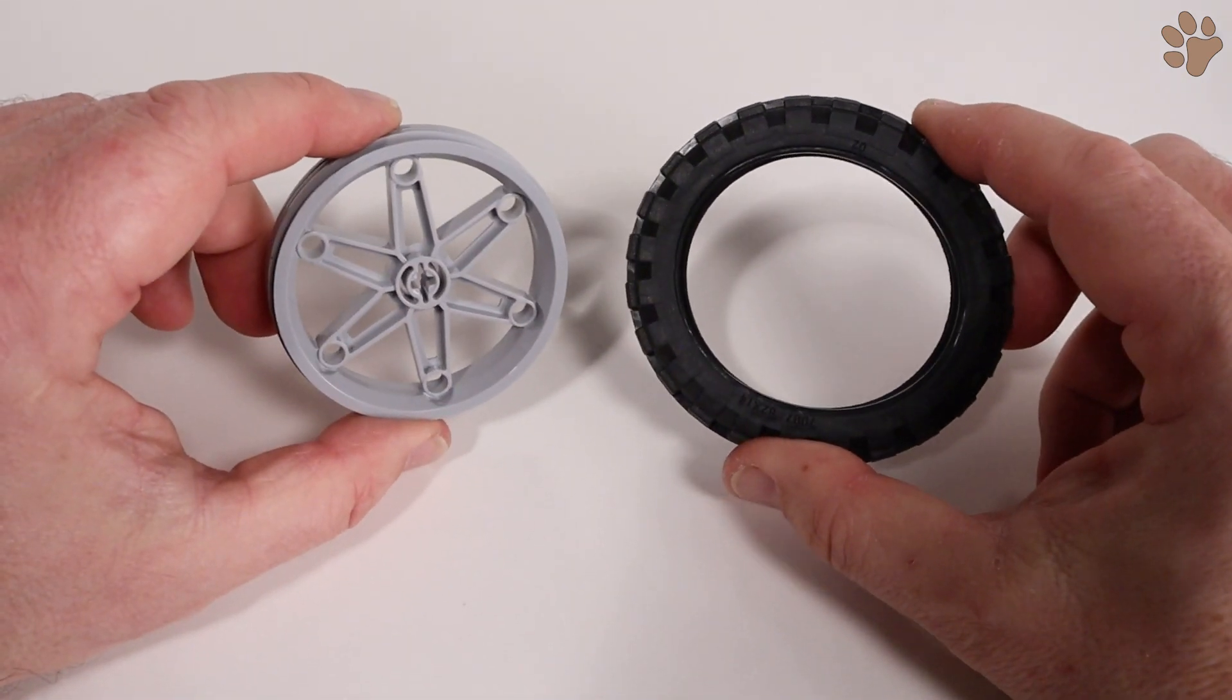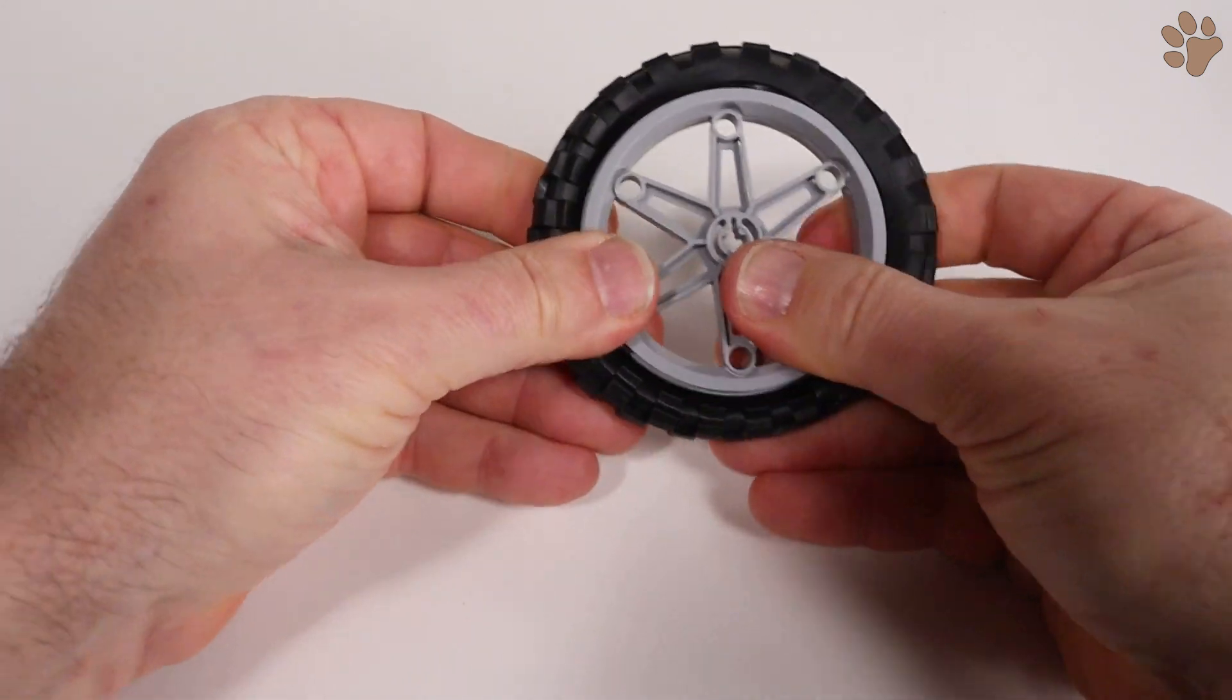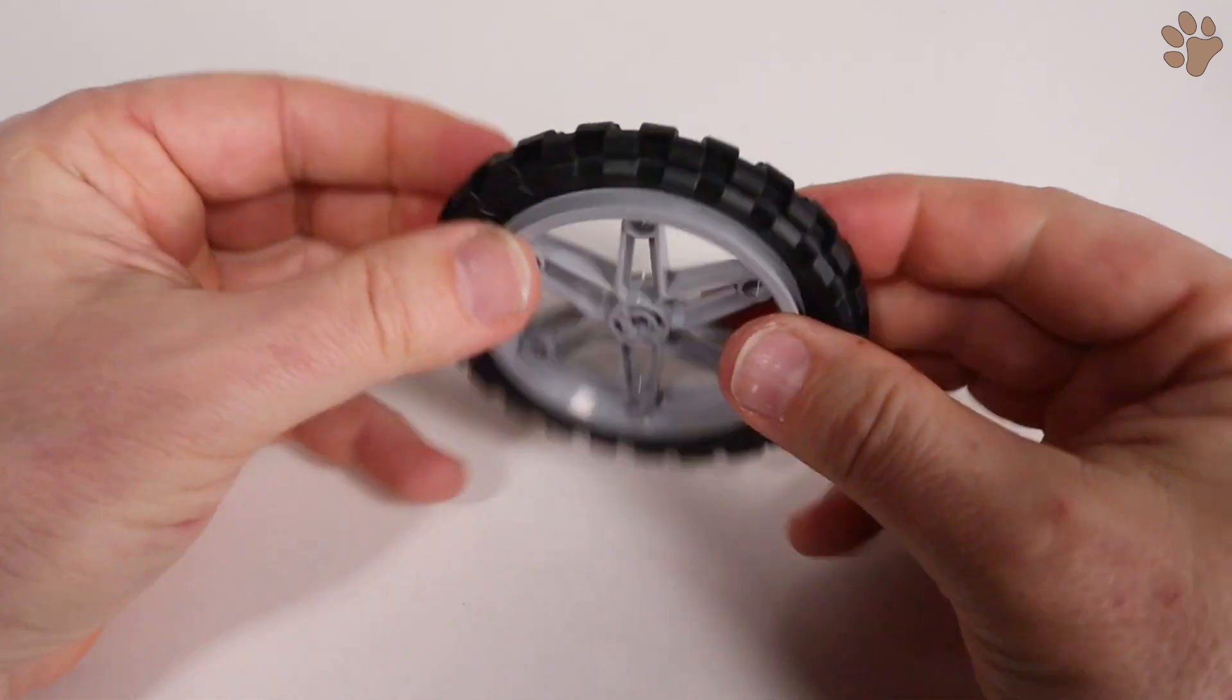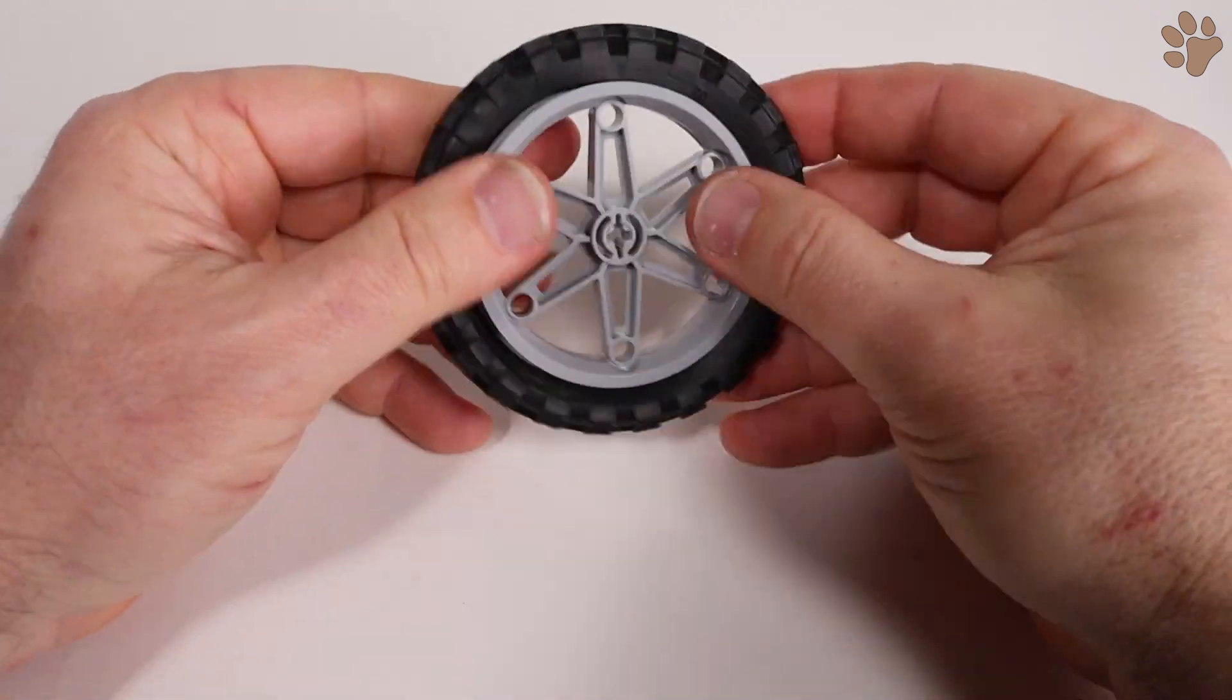Now let's get the wheels. The rims and tires are just like those on a real car. You may need to mount the tires onto the rims. To do so, press the rubber tire over the plastic rim and work it around the edges until it's fully mounted.